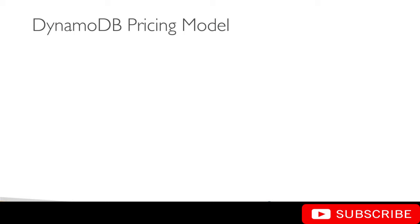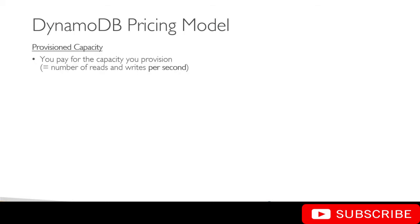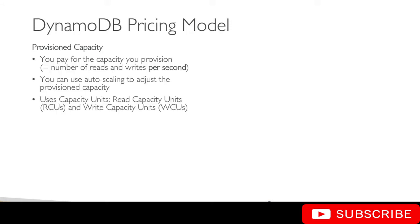First, the provisioned capacity. Here, you pay for the capacity that you provision — that is, you provision the number of reads and writes per second that your application requires, and you pay accordingly. You can also use auto-scaling to adjust the provisioned capacity on-demand. Provisioned capacity uses read capacity units and write capacity units, and if you consume beyond your provisioned capacity, that might result in throttling.